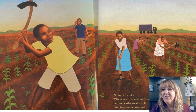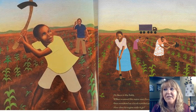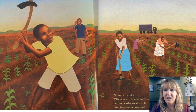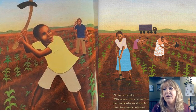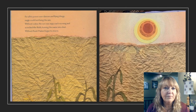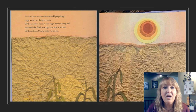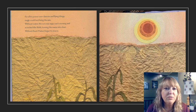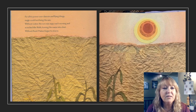At dawn in the fields, William scanned the maize rows for magical beans, then wondered as a truck rumbled past, how does its engine make it go? Pay attention to where you throw that hoe, his father shouted. You'll cut your foot off. For all its power over dancers and flying things, magic could not bring the rain. Without water, the sun rose angry each morning and scorched the fields, turning the maize into dust. Without food, Malawi began to starve.